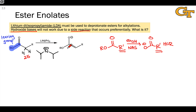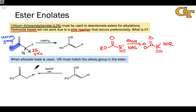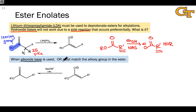All that said, we can and commonly do use alkoxide bases to partially form ester enolates under thermodynamic control. Alkoxides do engage in nucleophilic acyl substitution, just like hydroxides. However, we can avoid an issue as long as we make sure that the alkoxide R group matches the alkoxy group in the ester — this makes any nucleophilic acyl substitution completely redundant and won't change the structure of our starting material.